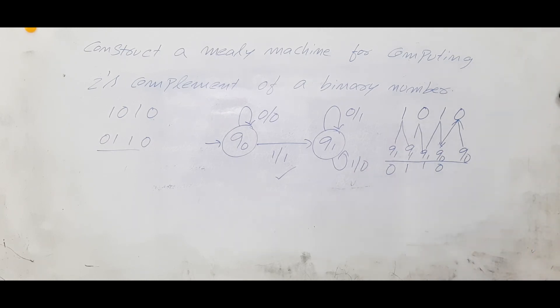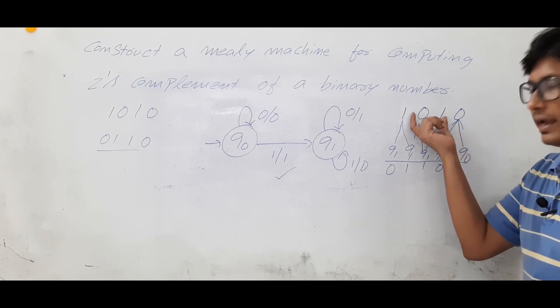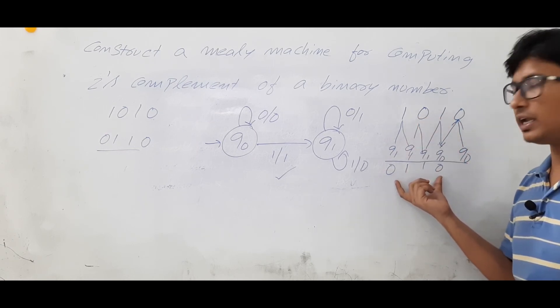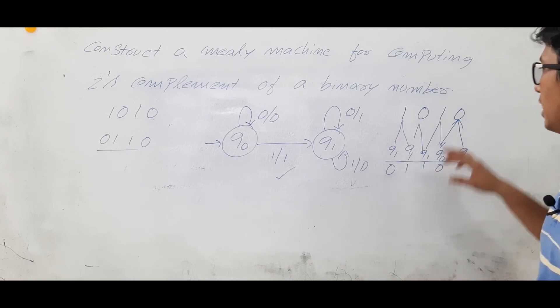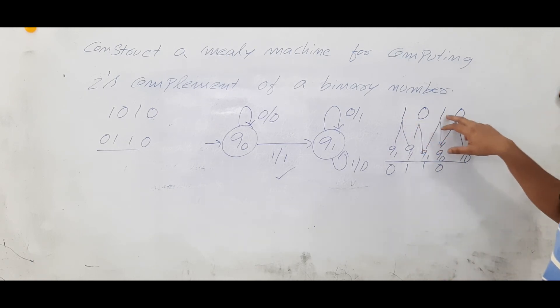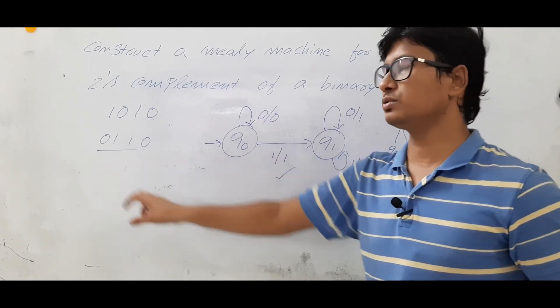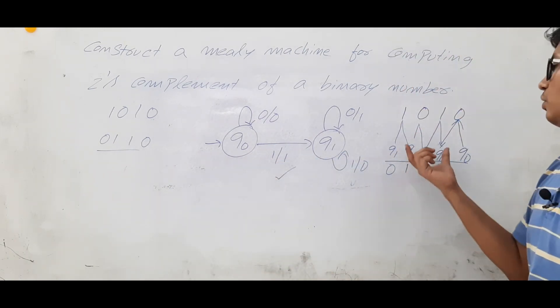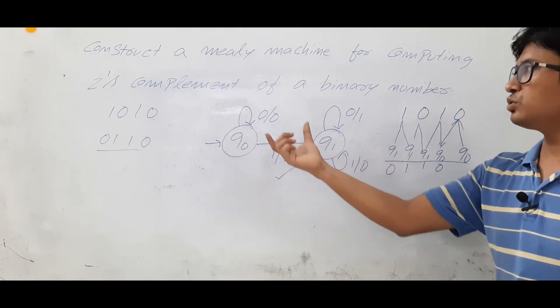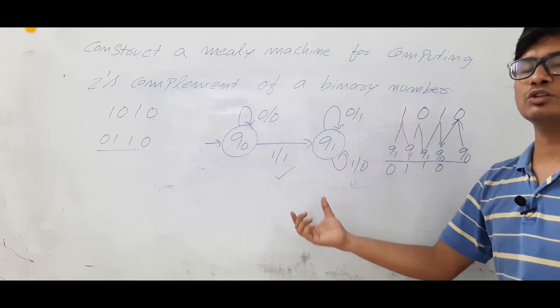So now if you see that a Mealy machine, if you give the input length is n, you will get the output string length is also n. It is correct. And what is the 2's complement of 1 0 1 0? It is 0 1 1 0. That is what we got here. So I can say that we have constructed a 2's complement Mealy machine and it is also correct.